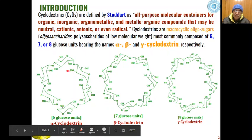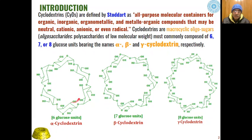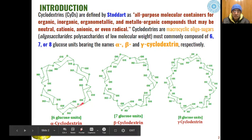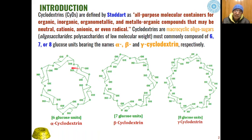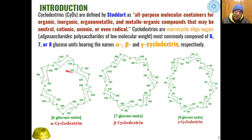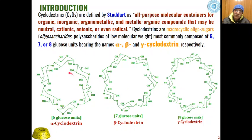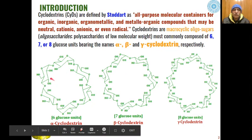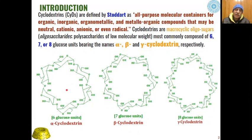Because of the number of glucose molecules clubbed together — six for alpha, seven for beta, and eight for gamma — the size of the cavity present in the molecule varies. Alpha has a smaller cavity than beta, and beta smaller than gamma. Based on that, we get inclusion compounds formed due to the presence of this polymeric structure of polyhydroxy compounds inside the molecule.